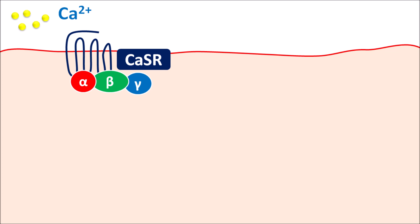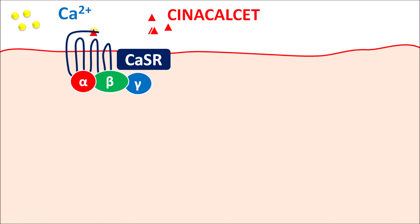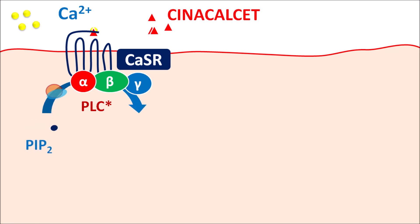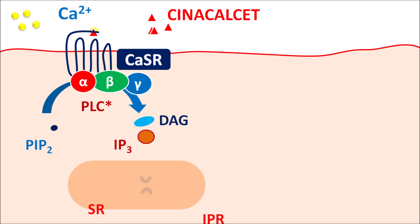But when calcium is at low concentration, it cannot significantly stimulate these receptors. In such situations, we can use Cinacalcet, which acts as a calcimimetic agent. It can bind to calcium-sensing receptors, which improves the binding of calcium to these receptors, leading to their activation. When these receptors are activated, they can stimulate the Phospholipase C system, so that phosphatidylinositol bisphosphate can be split into two fragments: IP3 and DAG (diacylglycerol). IP3 can release intracellular calcium from the sarcoplasmic reticulum.